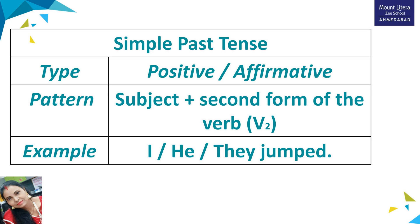For making positive sentences, we simply follow this pattern: subject plus the second form of the verb, that is the past form of the verb. Whether the subject is singular or plural, we use the second form of the verb. For example, 'I / he / they jumped' — here 'jumped' is the second form of the verb.